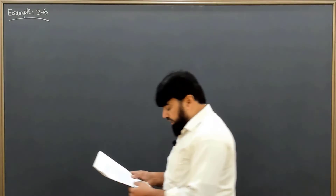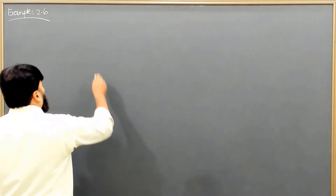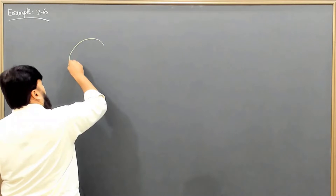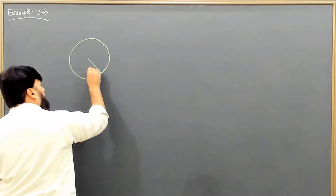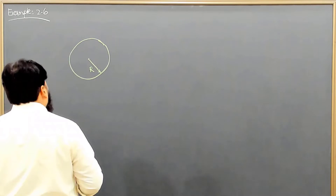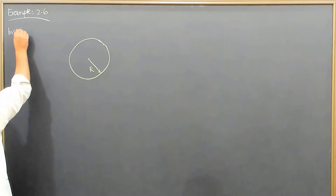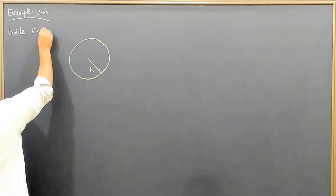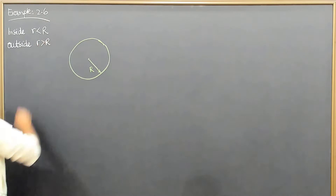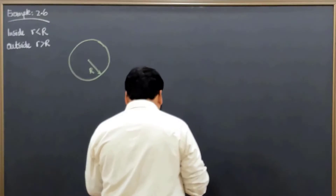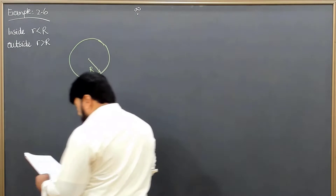Let me draw the figure. We have a sphere of radius capital R. We are supposed to find the field inside, meaning r less than R, and outside, meaning r greater than R. For the potential formulation the reference point is set at infinity, and we will find the potential here.